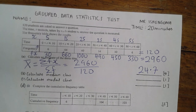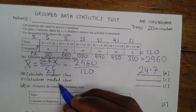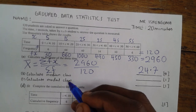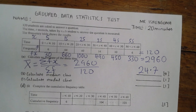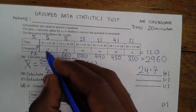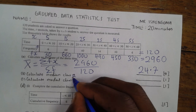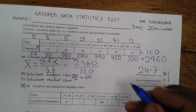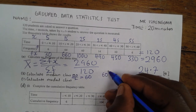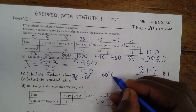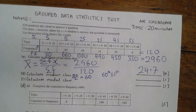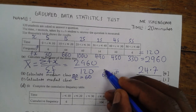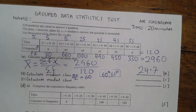Now, calculate the median class. In short, the median class is the class that will contain our expected median data. Our total cumulative frequency is 120; when we divide by 2 we get 60. So which class contains the 60th and 61st numbers? If both numbers are found in one class, that class will be our median class.